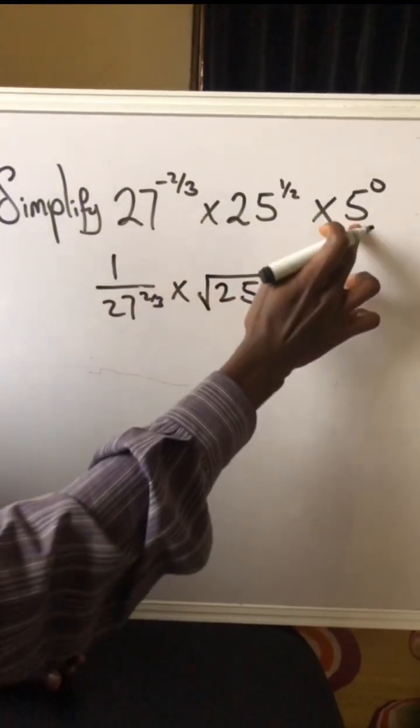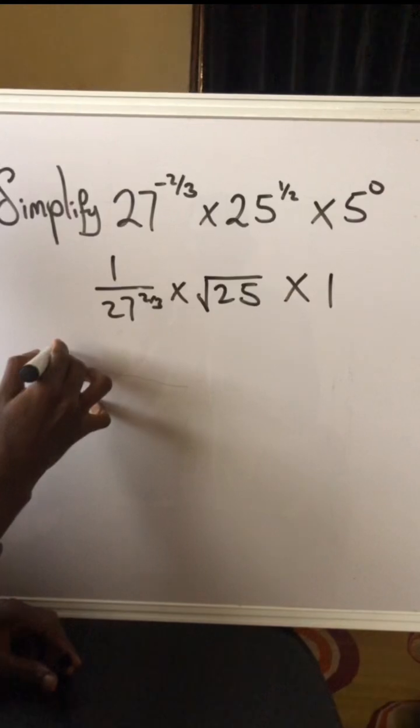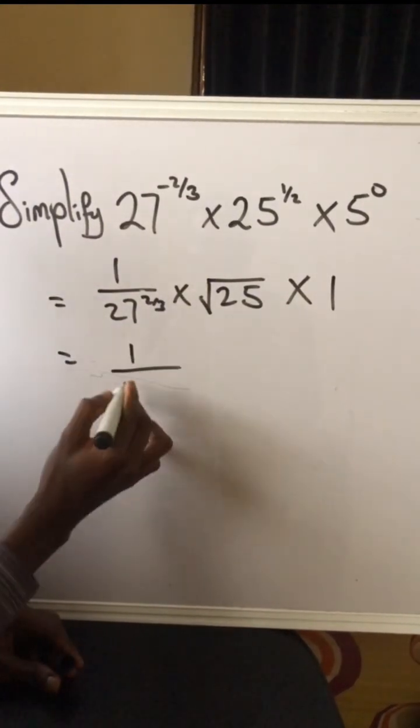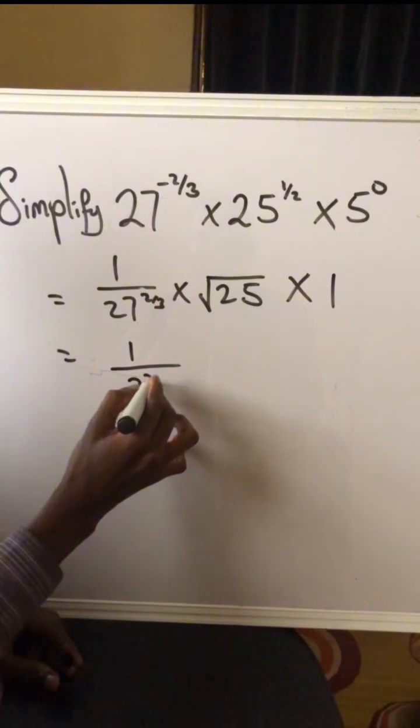Alright, so what do we have to do? We have 27, which is 3 to the power of 3. So we get (3^3)^(2/3) times square root of 25, which is absolutely 5, times 1.